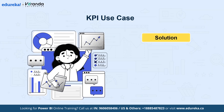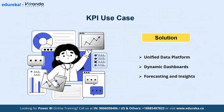Using Power BI, Blinkit addressed its challenges with the following approach. First, a unified data platform integrates sales, inventory, and customer feedback data into a single Power BI workspace. Next, dynamic dashboards help create real-time tracking of KPIs like sales trends, stock levels, and customer satisfaction scores. Forecasting and insights were implemented using Power BI's AI capabilities to forecast demand. Enhanced collaboration enabled teams to share reports across departments via cloud-based dashboards.